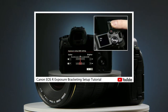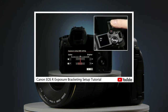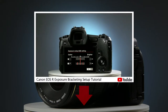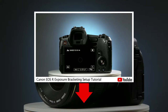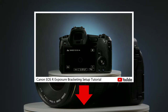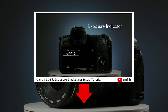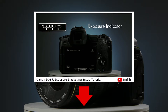And talking of bracketed photos, if you haven't watched the full tutorial on setting the AEB on this camera, then follow the link in the description below. I'll show you a quick recap at the end of this video anyway, but let's start with setting the self-timer.